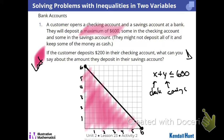A student raises a question: maybe those intercepts wouldn't work because you'd have to have something in each account, even if it was just a penny. They will deposit some in each account — they might not deposit all of it. I guess it doesn't say it can't all be in one account. If we interpreted it that way, maybe open points on those intercepts? But the intent here is that we could have all in one currently. I might need to check with somebody to see if an open point on a linear inequality is a thing.